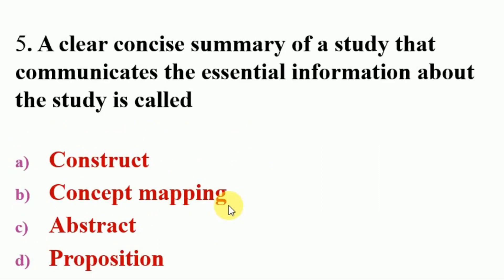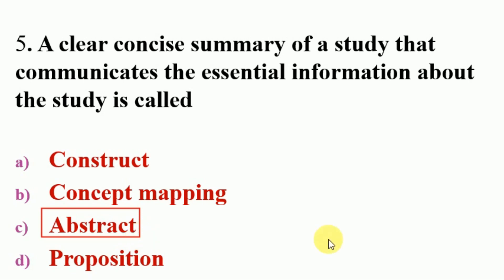Next question: a clear, concise summary of a study that communicates the essential information about the study is called — options: A. construct, B. concept mapping, C. abstract, D. proposition. The answer is C, abstract. An abstract is a clear, concise summary of a study that communicates the essential information, or otherwise a brief summary of the research article.